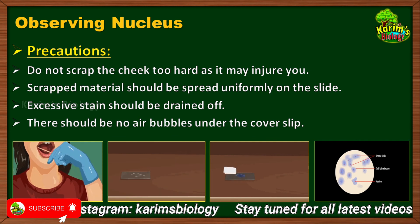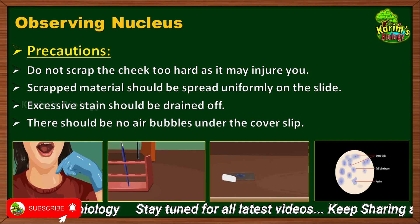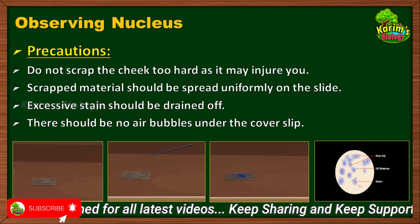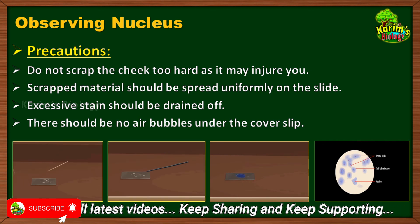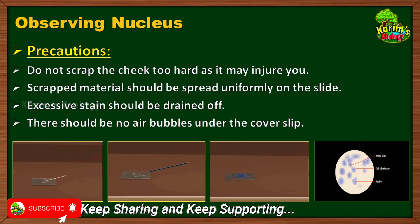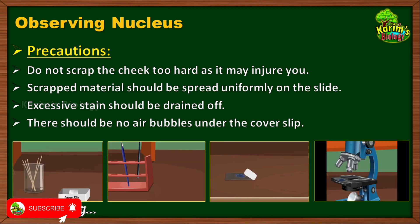This is the procedure to observe cheek cells along with the nucleus under the microscope. I hope you understood. In my next session I will explain the structure and function of the nucleus and the classification of cells based on the presence and absence of a nucleus. I will meet you in the next session.